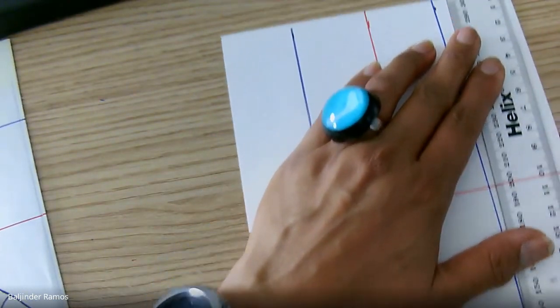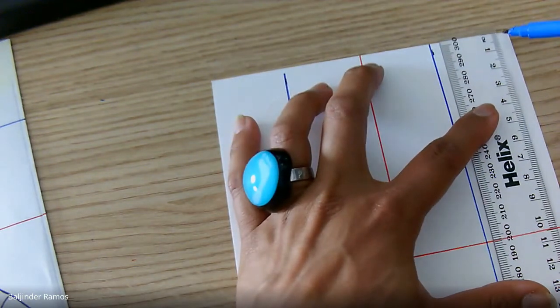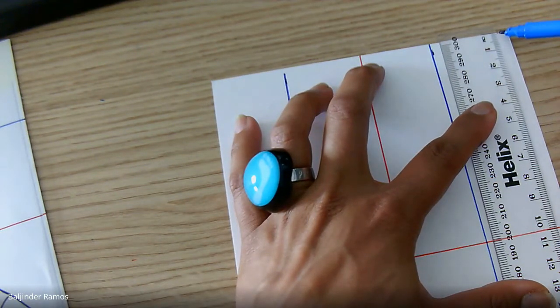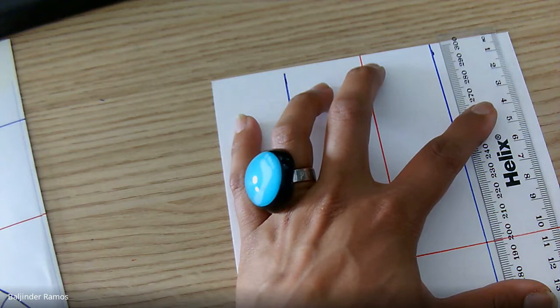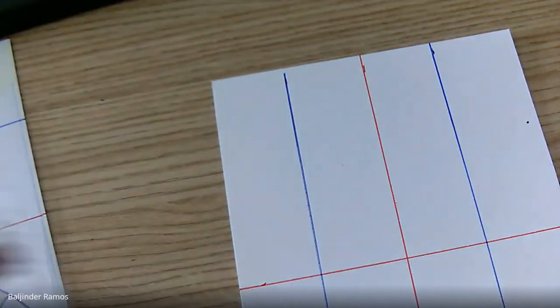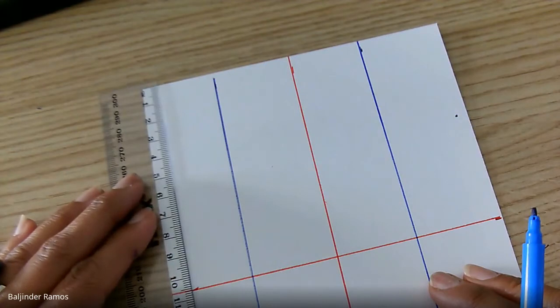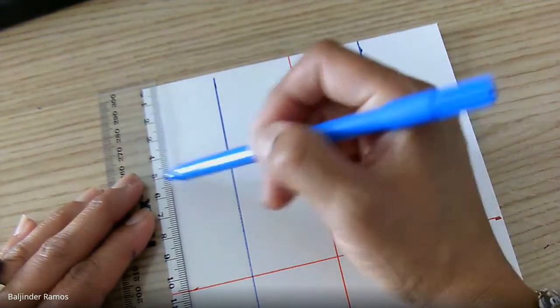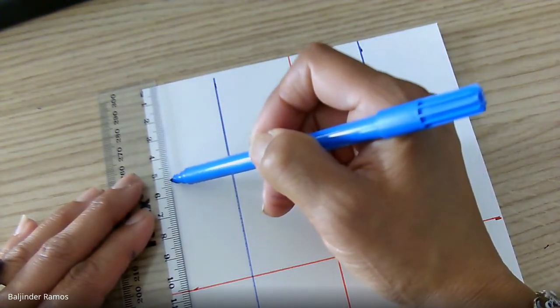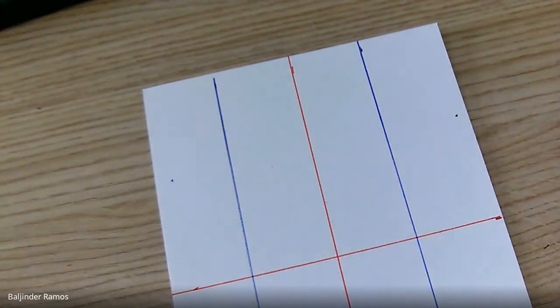That is ten and a half, so we're looking about 5.2 approximately. Put a dot there, and then just move my camera down. So again on the other side 5.2. Join those two dots together.